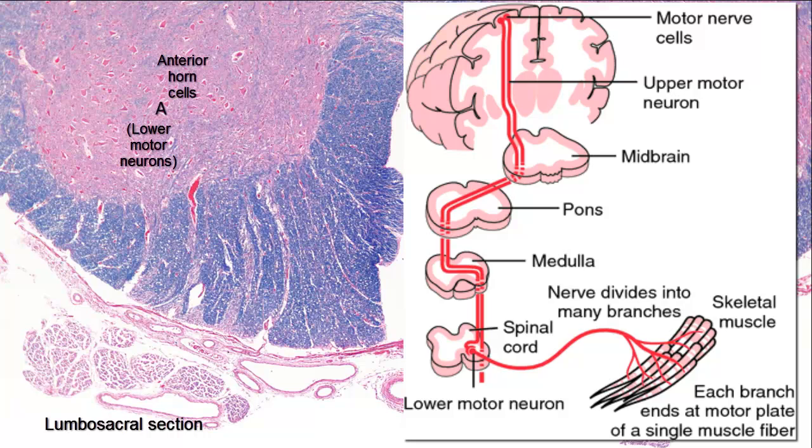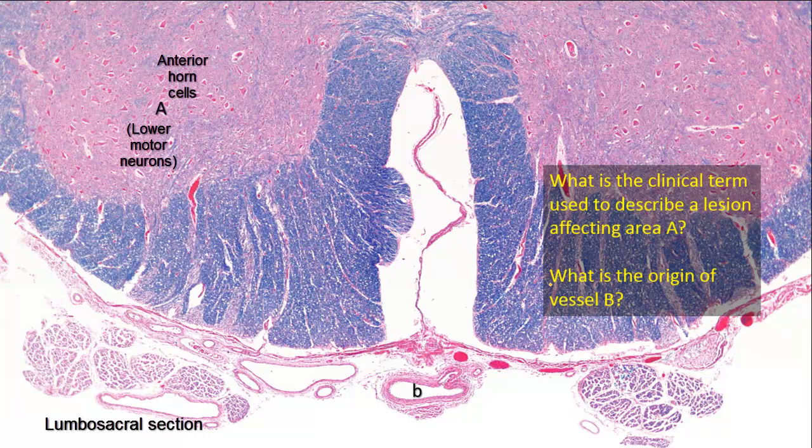A lesion affecting these cells in A, as in poliomyelitis, would result in flaccid paralysis. The paralysis will be ipsilateral to the lesion and only at the level affected. Since this is the lumbosacral region, it affects the lower limb. There will be diminished or absent tendon reflexes, progressive atrophy of the muscles deprived of motor fibers, and flaccid paralysis. B is the anterior spinal artery; you can see its proximity to the anterior median fissure of the spinal cord.